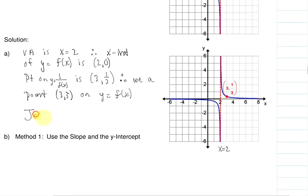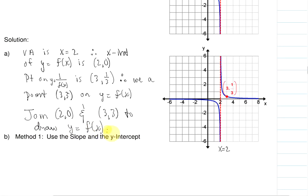Now we've got two points, and we're going to join (2, 0) and (3, 3) to draw y equals f of x. Let's plot our points. We have one at (2, 0) and one at (3, 3), and so we're going to join those and we are going to get this line — y equals f of x.